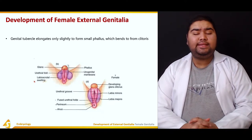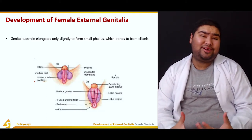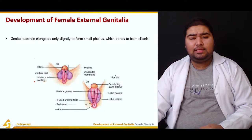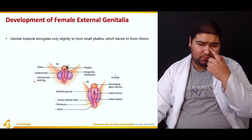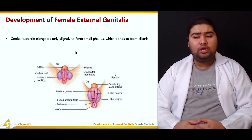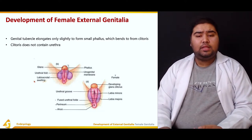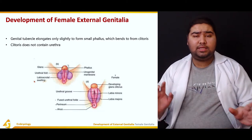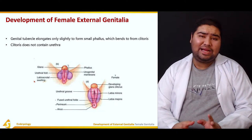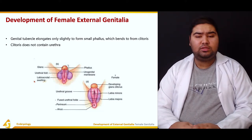The genital tubercle elongates only slightly, as it does not require the dramatic elongation seen in males. It forms a small phallus which bends upon itself to form the clitoris. The phallus enlarges slightly and bends to form the clitoris. Importantly, the clitoris does not contain the urethra — in the male the enlarged glans contains the penile urethra, but the clitoris does not.